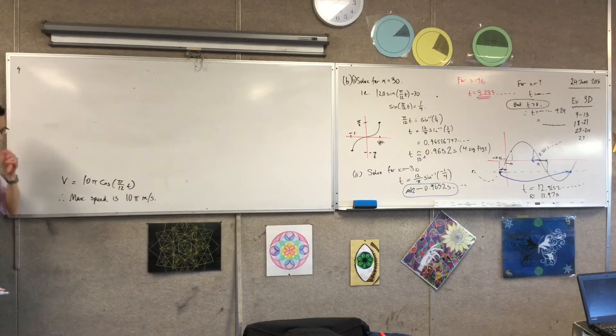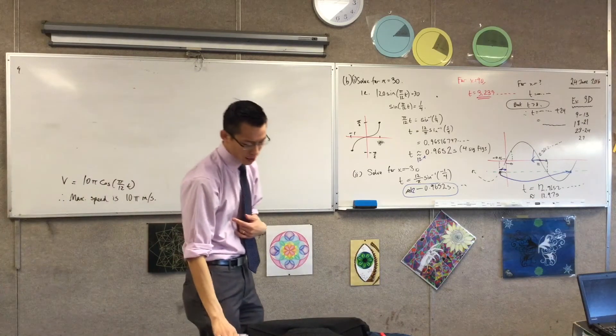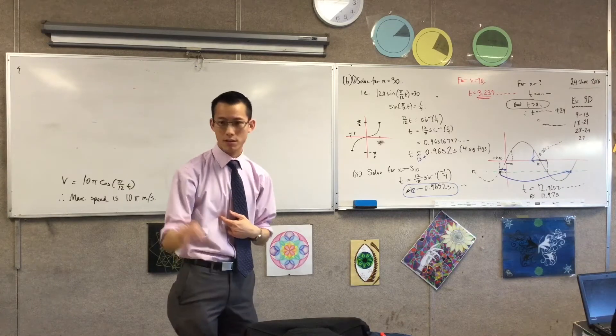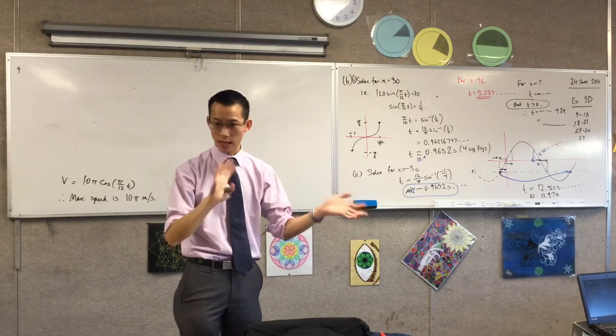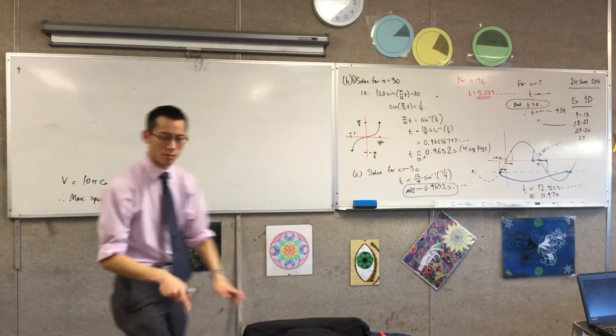So here's my velocity function. It says the first two times its speed. So speed, do I care about sign at the moment? I don't. So positive, negative, doesn't matter. It's half its maximum speed.